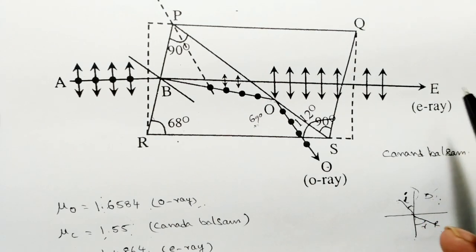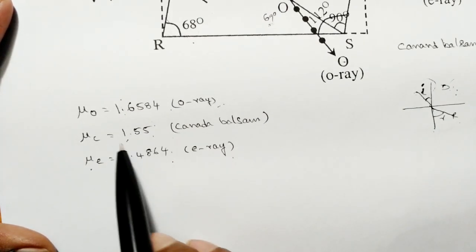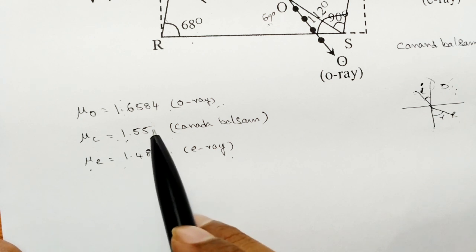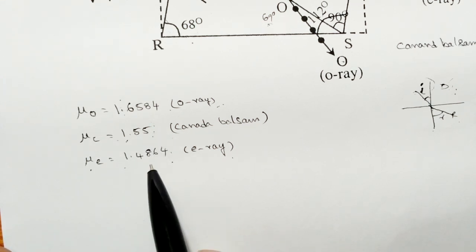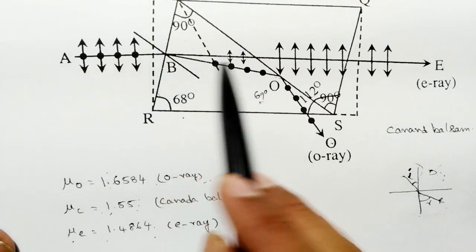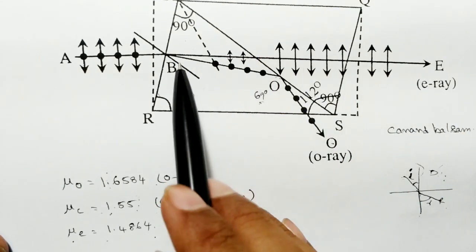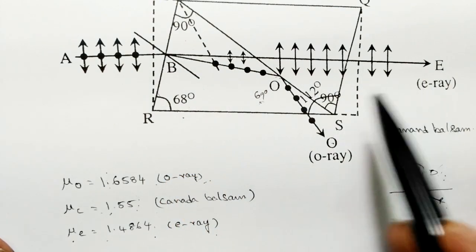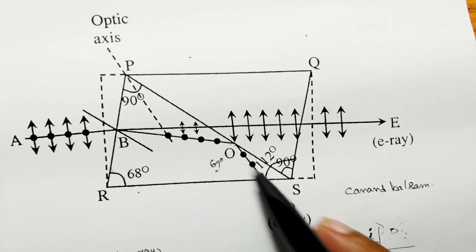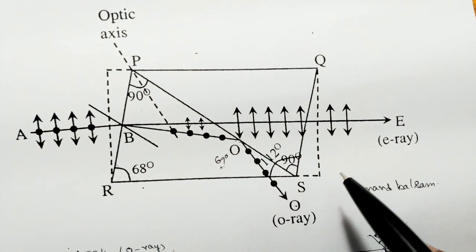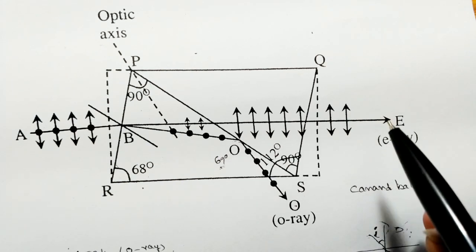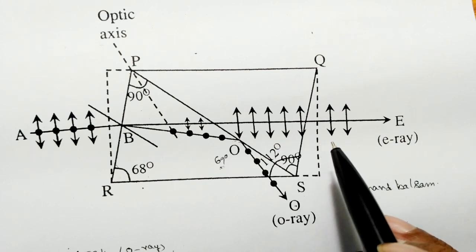For the extraordinary ray, the refractive index is 1.4864 and Canada balsam is 1.55. Here Canada balsam acts as the denser medium and the calcite as the rarer medium. When the extraordinary ray travels from rarer to denser medium, it slightly bends and passes through, giving us pure plane polarized light.